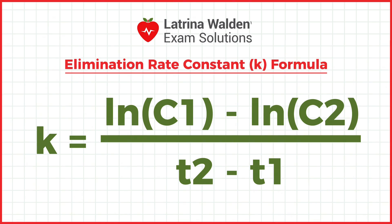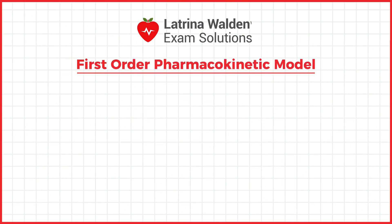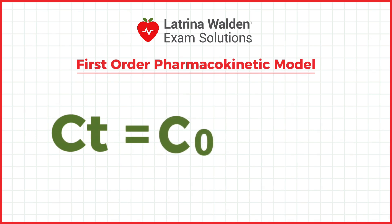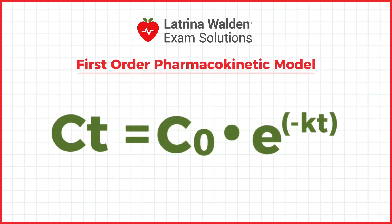This tells you the rate at which a drug is cleared from the body. To calculate the first-order pharmacokinetic model, the equation is Ct equals C0 multiplied by e to the power of negative Kt, where Ct is the drug concentration at time t, C0 is the initial concentration, K is the elimination rate constant, and t is time.